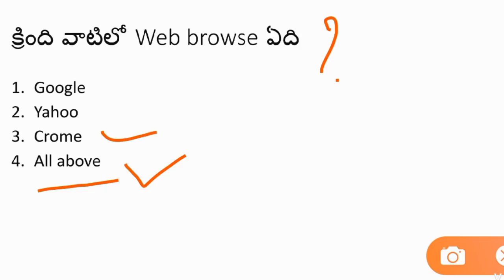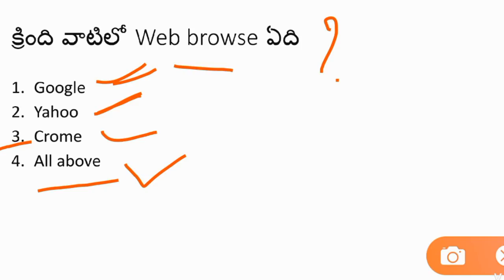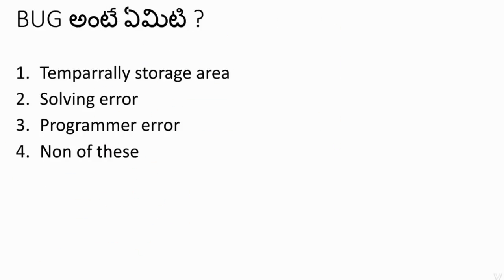A web browser is used to view information on the internet. Examples of web browsers are Chrome and UC Browser. A search engine is used to locate information. Examples of search engines are Google and Yahoo.